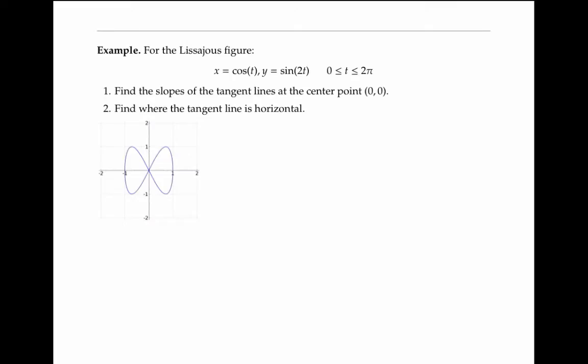For the Lissajous figure given by these equations and drawn below, let's find the slopes of the tangent lines at the center point with x and y coordinates of zero, and let's find where the tangent line is horizontal. The slope of the tangent line is given by dy/dx, which is dy/dt divided by dx/dt.